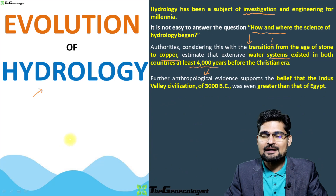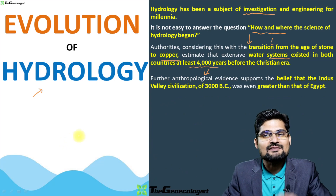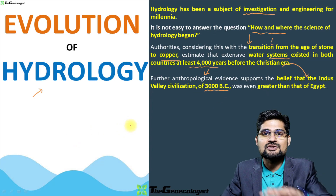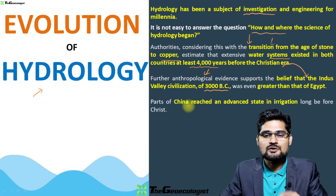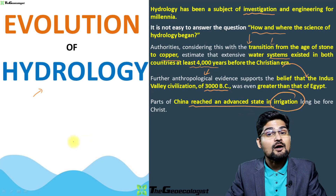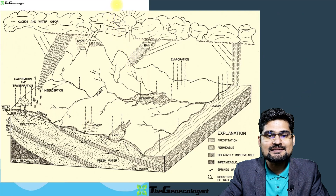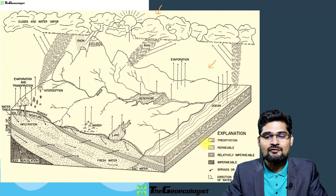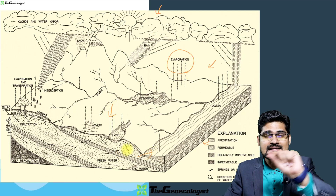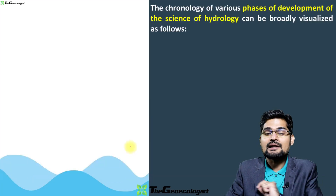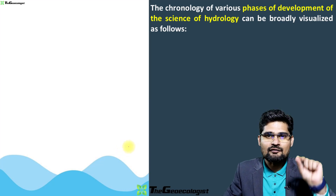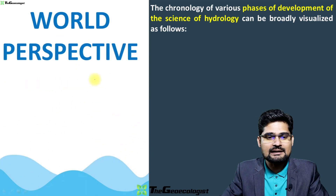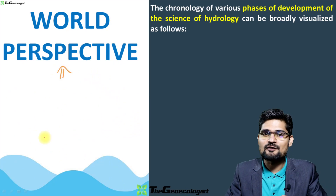Looking at anthropological and archaeological evidence, we find that the Indus Valley civilization around 3000 BC had greater hydrological systems than Egyptian civilization or any other civilization of the same age — Mesopotamia or Chinese. Parts of China also reached an advanced stage in irrigation long before Christ. To understand the evolution of the hydrological cycle — from precipitation to evaporation to percolation to infiltration and runoff — we look at it first from a world perspective, then in the next lecture from an Indian perspective.